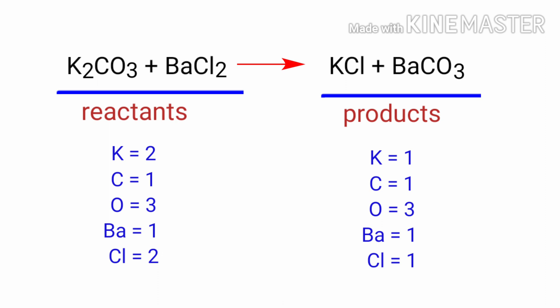In this equation we need to balance the potassium and chlorine atoms. To do this we need to put a coefficient of 2 in front of KCl.